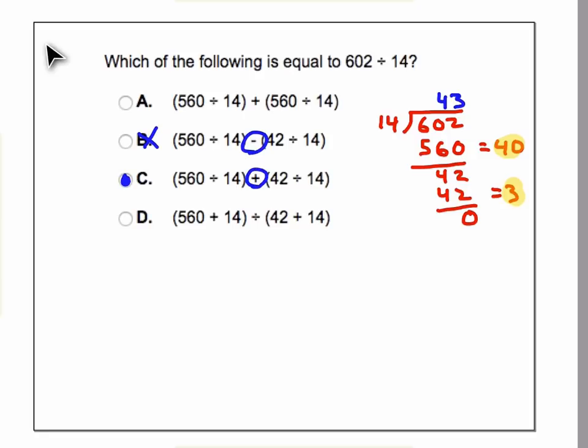On D, we have 560 plus 14, we don't want to add those, we want to divide those, so that's not right. And on A, we have 560 divided by 14 and then 560 divided by 14 again, that is also not right.